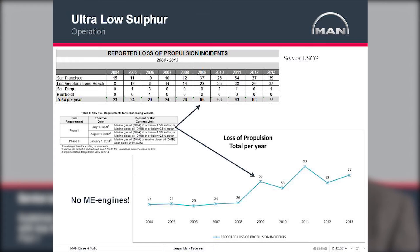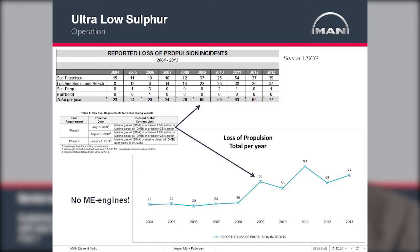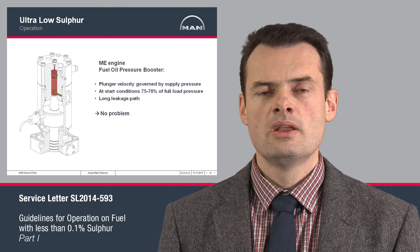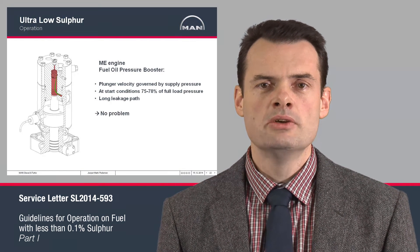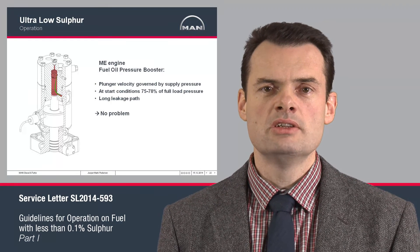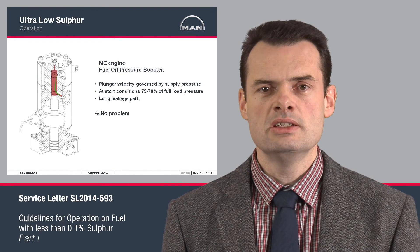Another topic that arose from the CARP ruling was that the number of loss of propulsion incidents increased dramatically just after the introduction of MGO operation. These incidents were predominantly caused by ships not being able to start the main engine on demand. From our knowledge, very few ME engines were involved in this, which can be explained by looking at the fuel booster pump design and the differences between ME engines and MC engines.